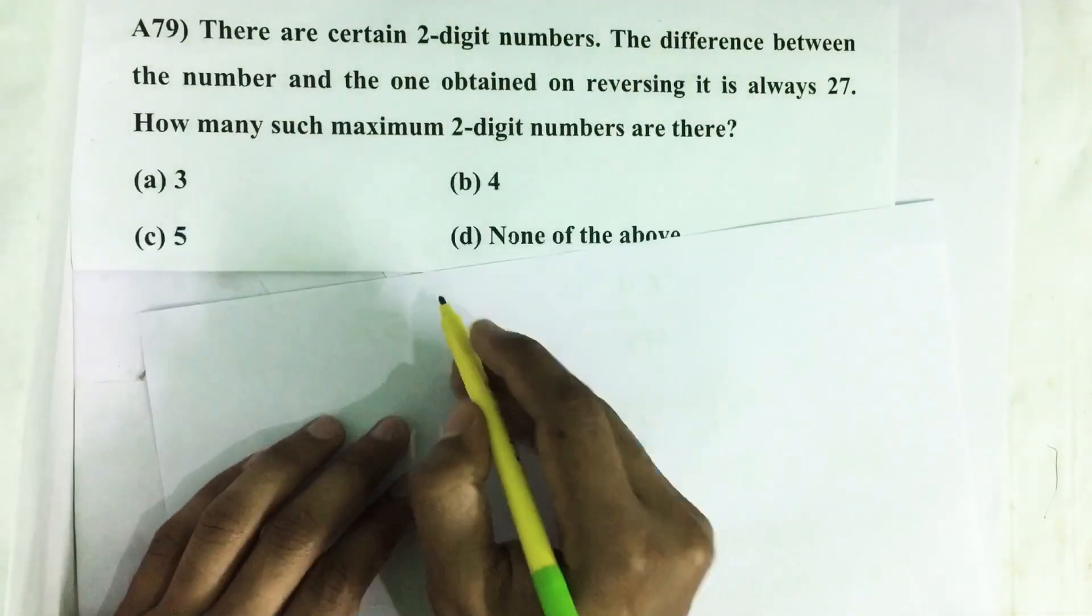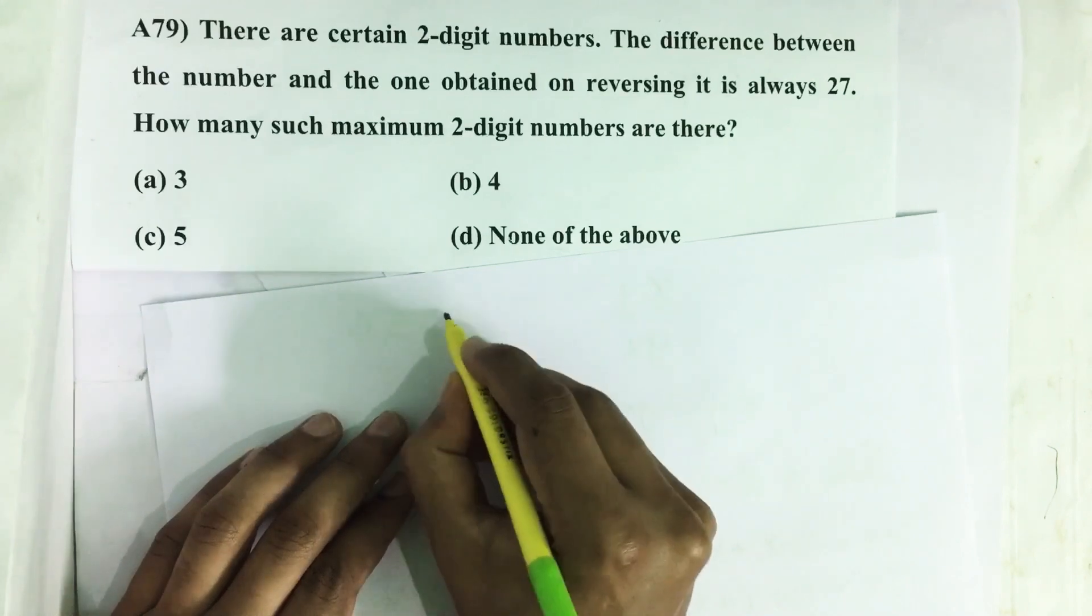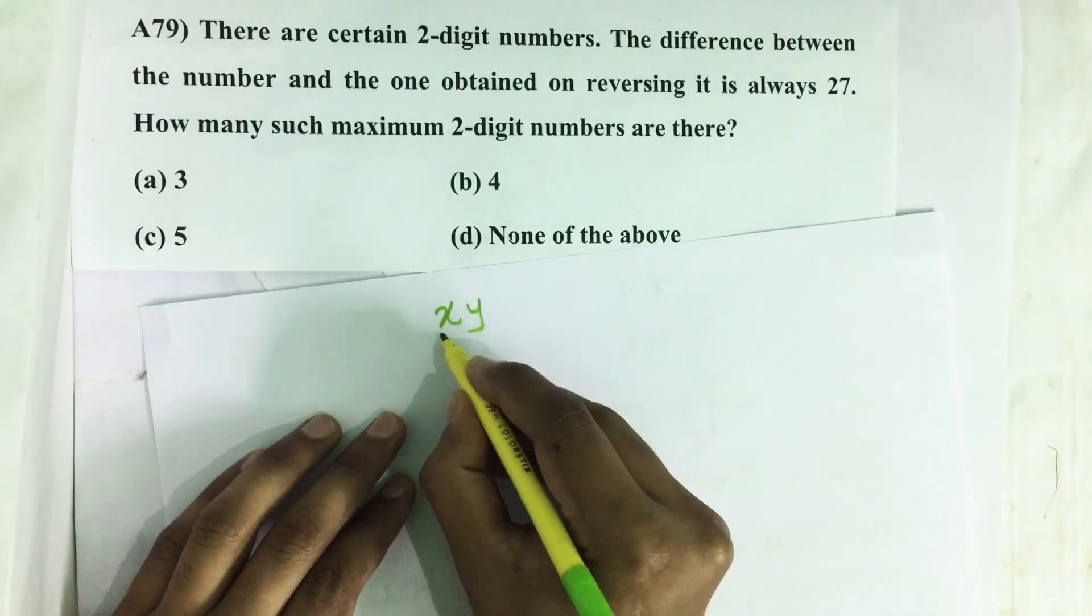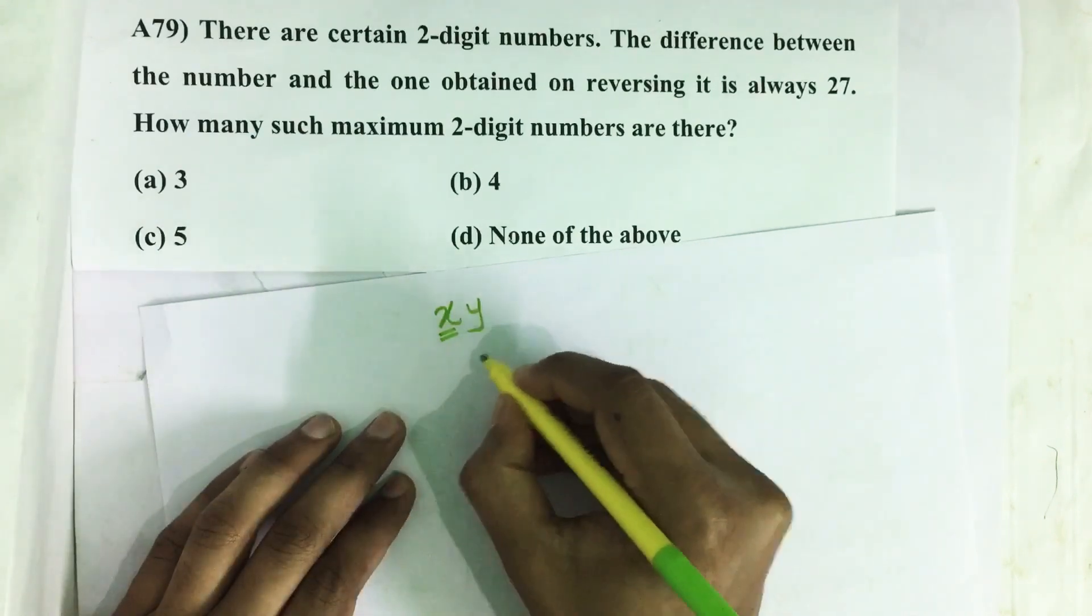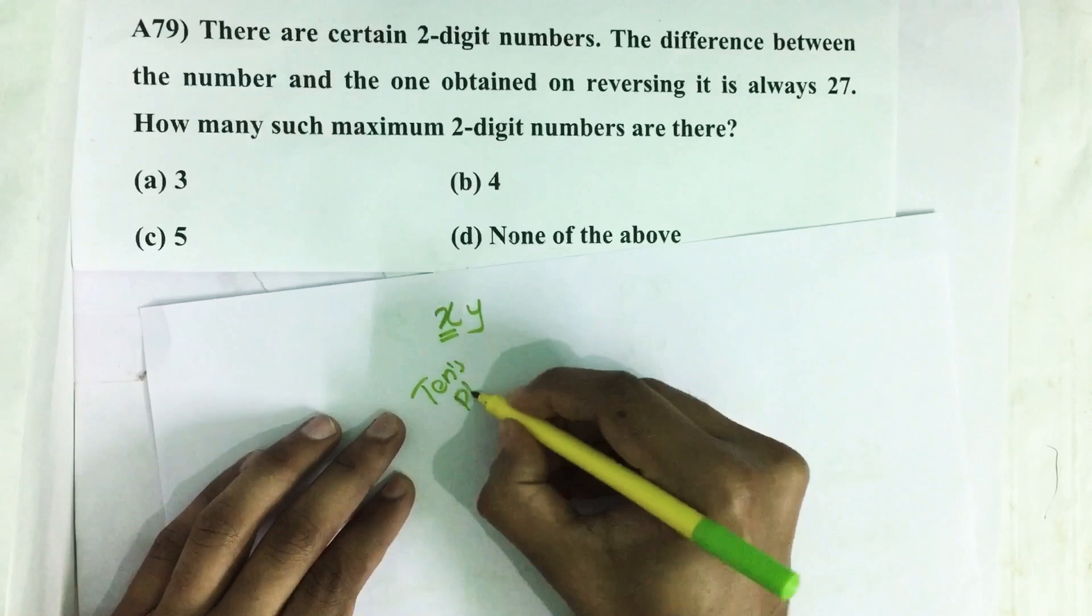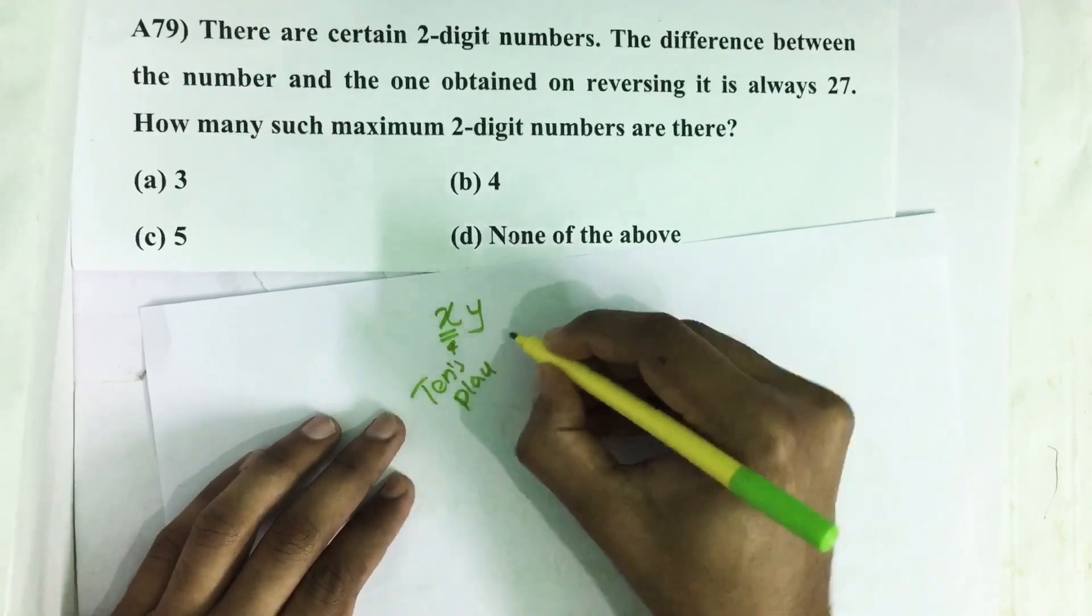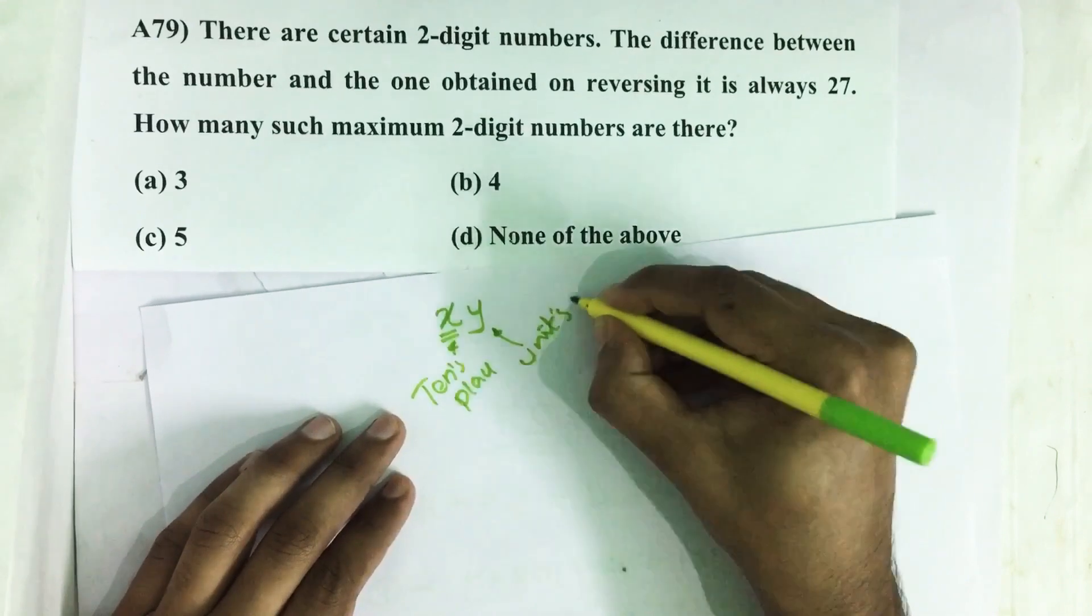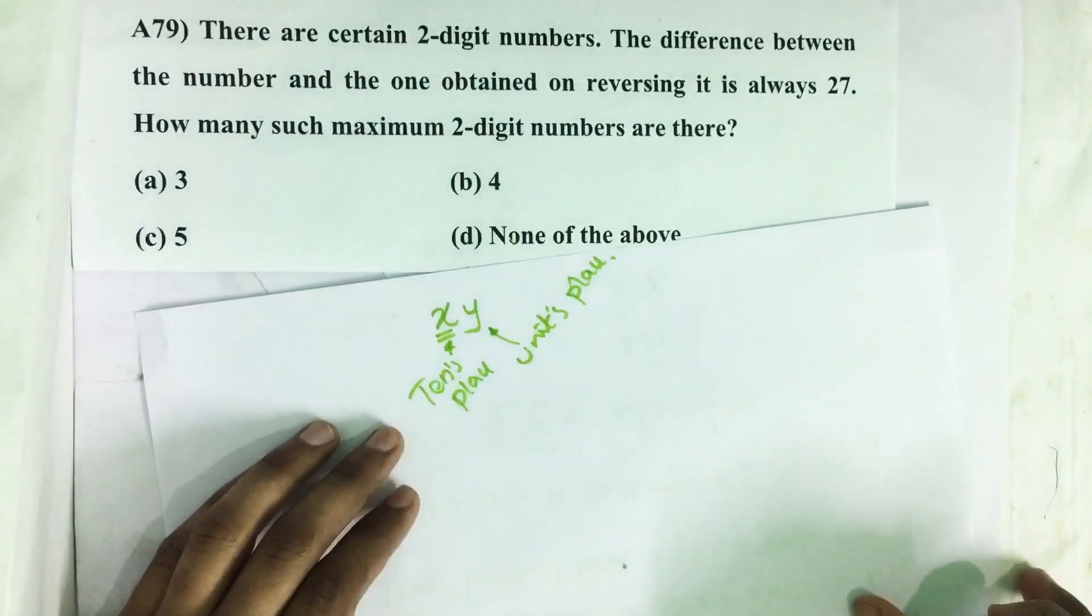So let us consider that two-digit number as XY. X is the digit on the 10th place and Y is the digit on the units place. This is a two-digit number.